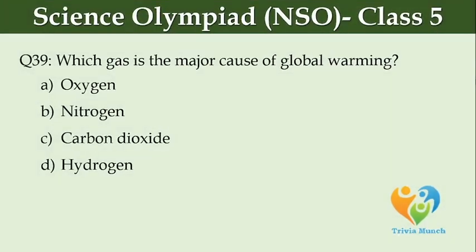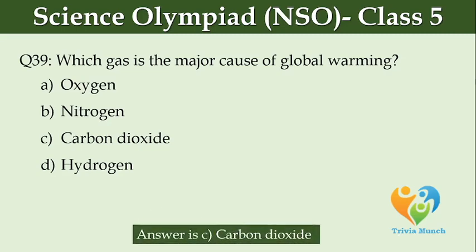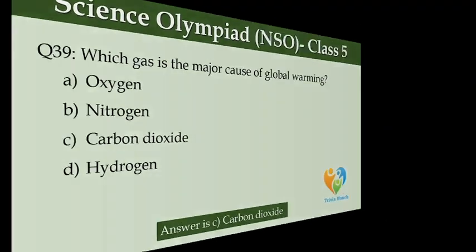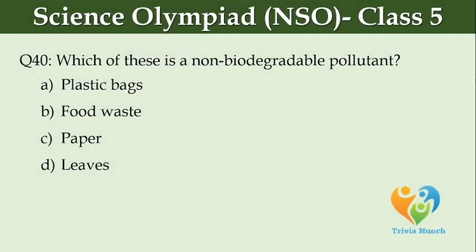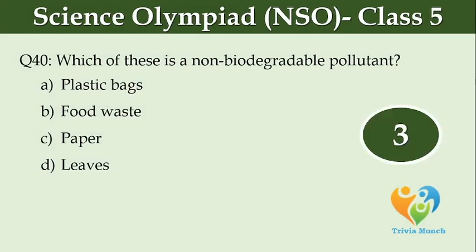Which gas is the major cause of global warming? Option A: oxygen. Option B: nitrogen. Option C: carbon dioxide. Option D: hydrogen. Which of these is a non-biodegradable pollutant? Option A: plastic bags. Option B: food waste. Option C: paper. Option D: leaves.